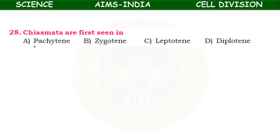Chiasmata are first seen in — pachytene, zygotene, leptotene, or diplotene? The answer is diplotene. Chiasmata are where the chromosomes are attached, and they appear during the diplotene of prophase 1.